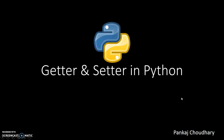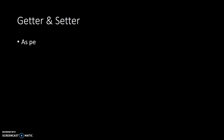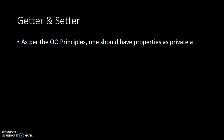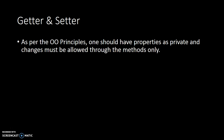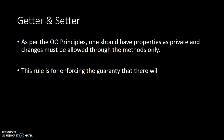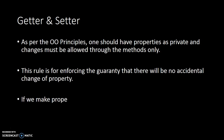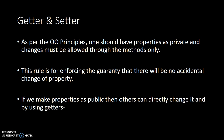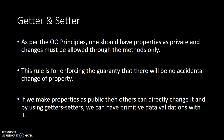Hello everyone, I am Pankaj Chaudhary and today we are going to learn Getter and Setter in Python. As per the object-oriented principles, one should have properties as private and changes must be allowed through the methods only. This rule is for enforcing the guarantee that there will be no accidental change of properties. If we make properties as public, then others can directly change it, and by using Getter Setters, we can have primitive data validation with it.